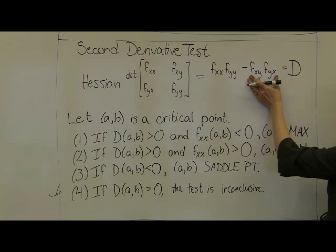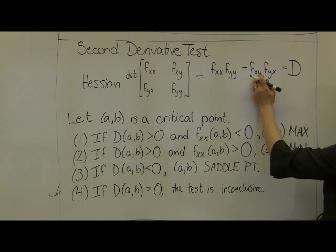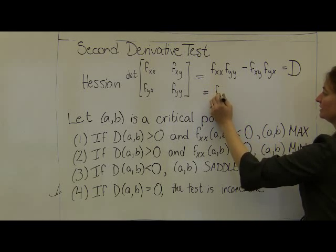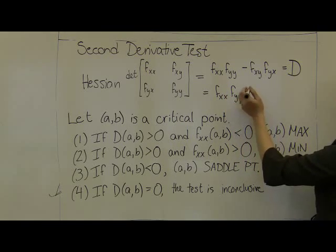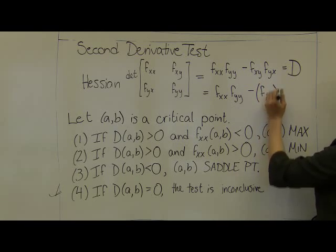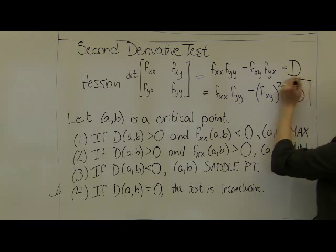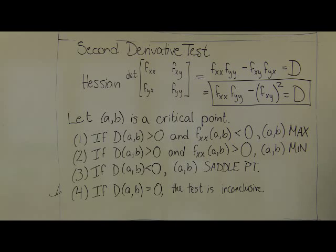By Clairaut's theorem, the mixed partial with respect to x then y equals the mixed partial with respect to y then x. So we can rewrite the discriminant as the second derivative with respect to x times the second derivative with respect to y, minus the mixed partial derivative squared. This is our D value, and we need it to compute the rest of our second derivative test.